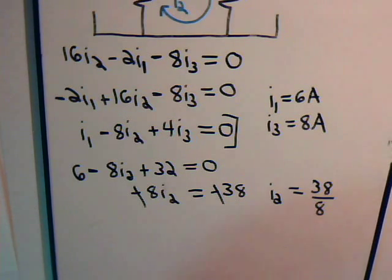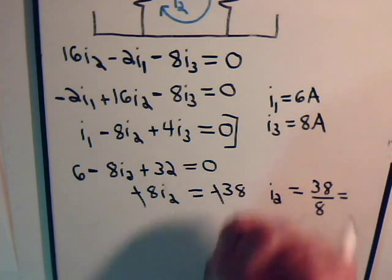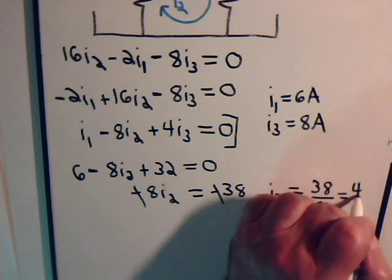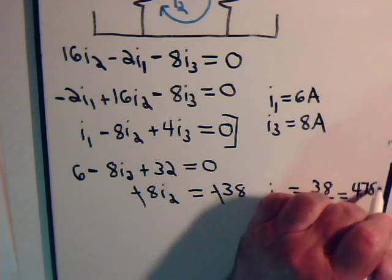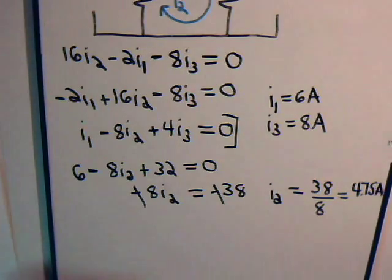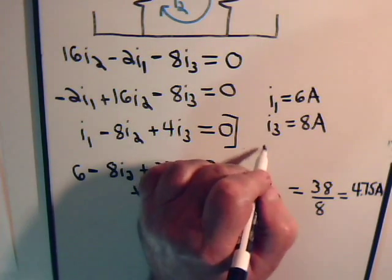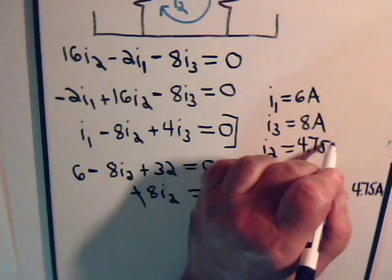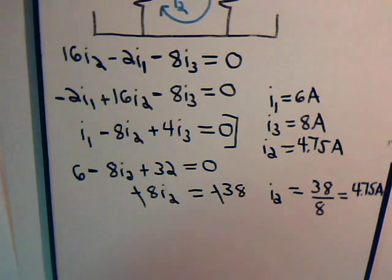Here is I2, 38 over 8, times 4 is 32 so that would be 6, 8 that's 4.75. So we know I2 equals 4.75 amps.